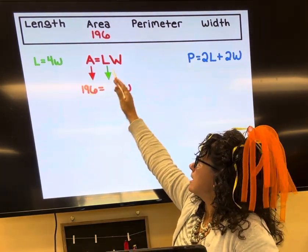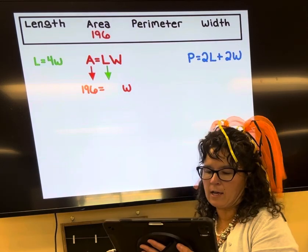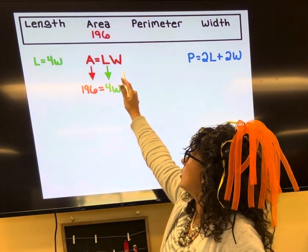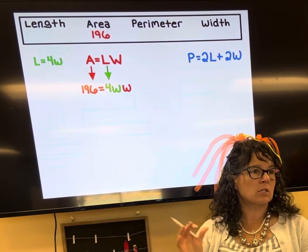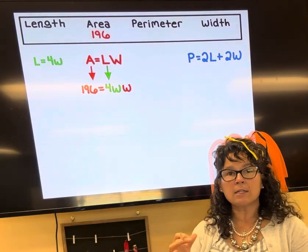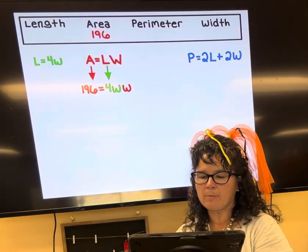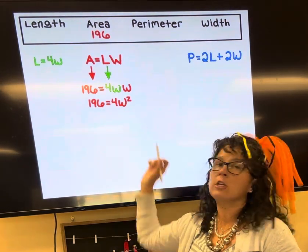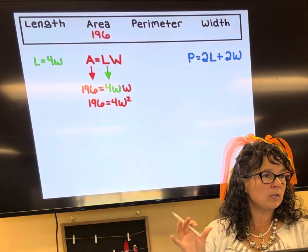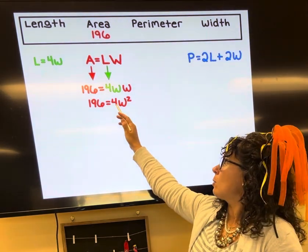I could replace the A with 196, and I could replace the L with 4W. So 196 equals, and instead of L I'm going to put in that 4W, bring down this W. This equation only has W's in it, so I can solve this one. Four multiplied by W multiplied by W is 4W². To finish solving this equation, you're undoing the order of operations, so I want to get rid of multiplication before I worry about exponents.